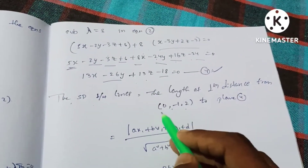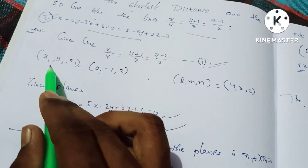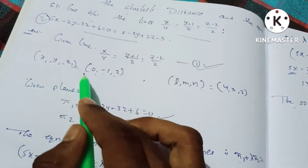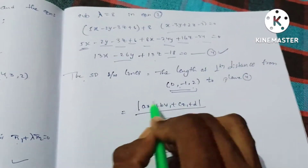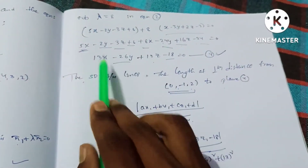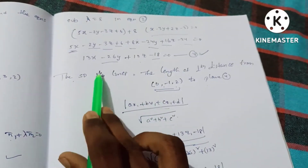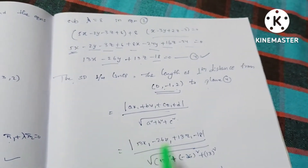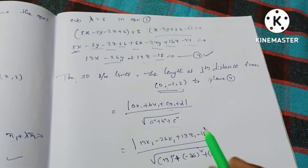For the shortest distance formula, we use x1 = 0, y1 = -1, z1 = 2 from Line 1. The numerator is: 13(0) - 26(-1) + 13(2) - 18 = 0 + 26 + 26 - 18 = 34. The denominator uses coefficients a = 13, b = -26, c = 13.